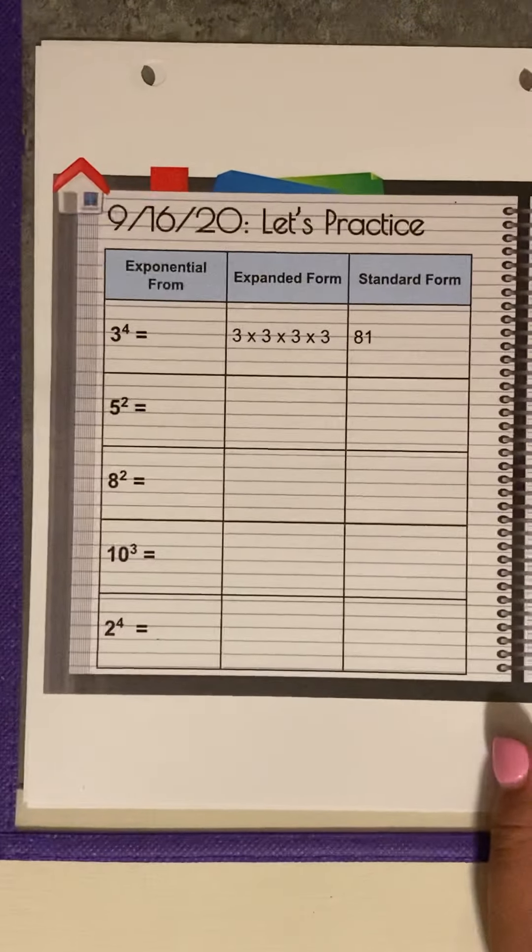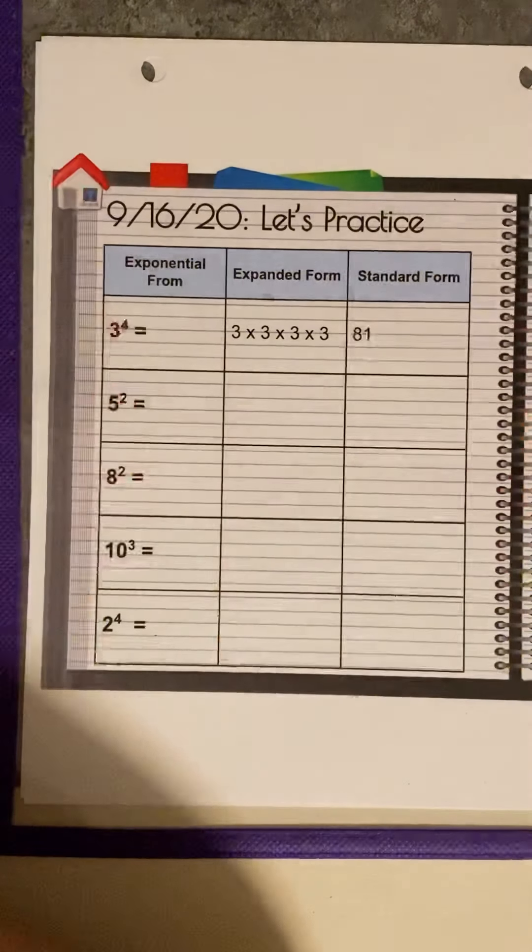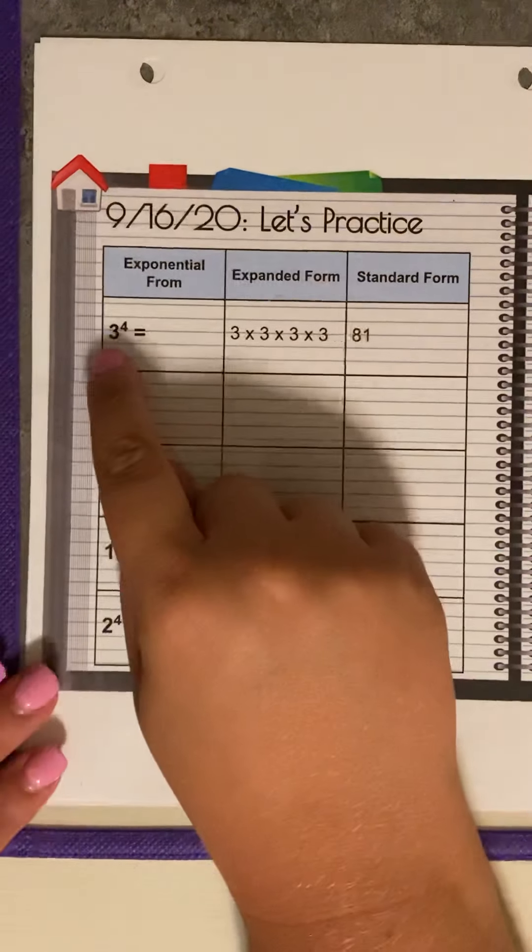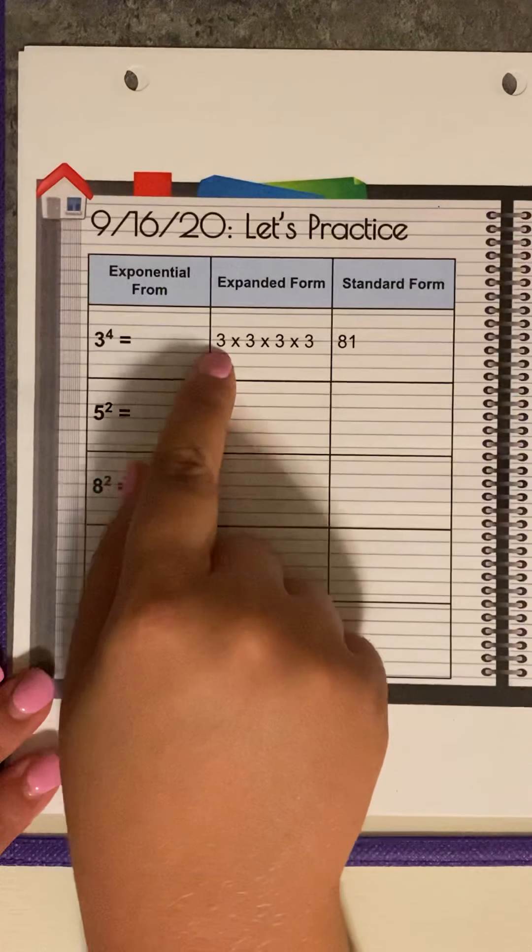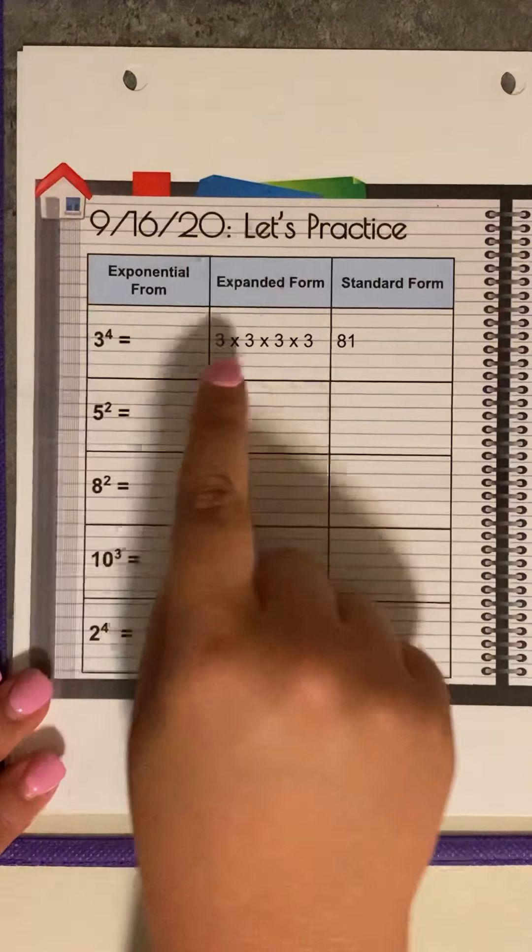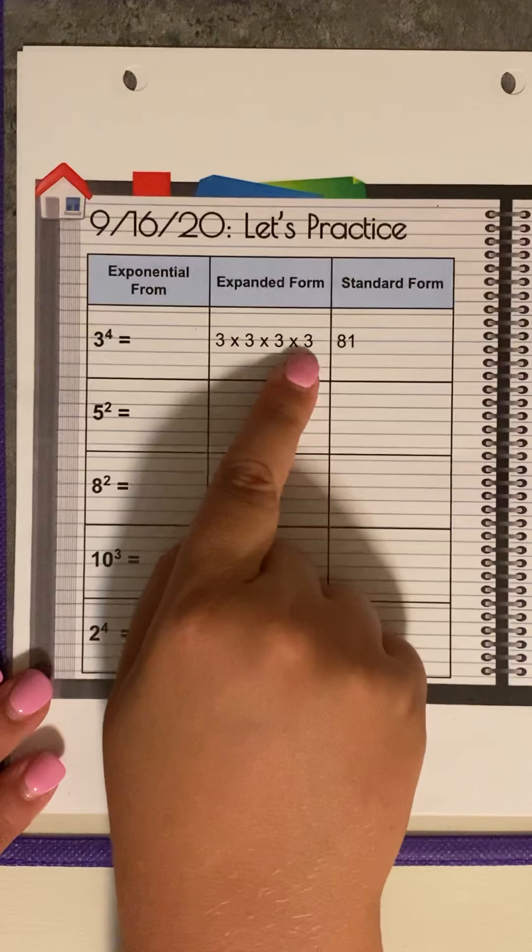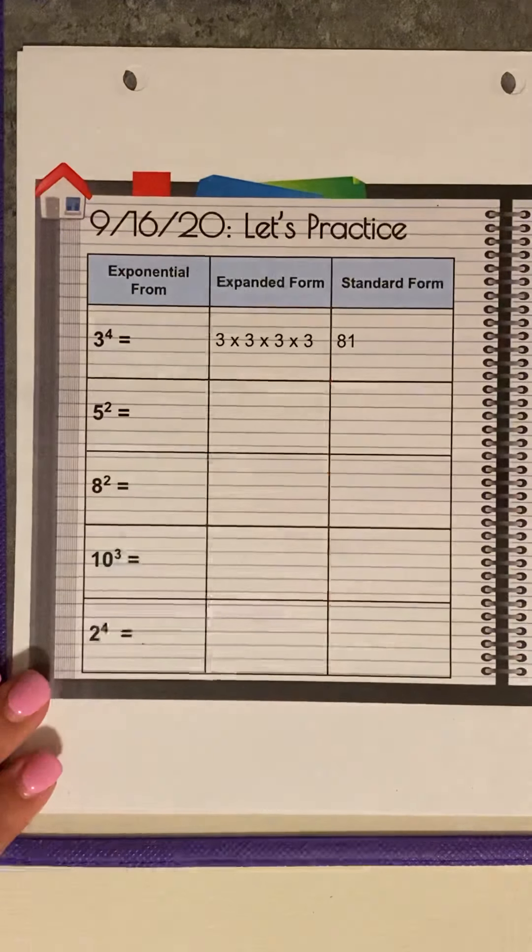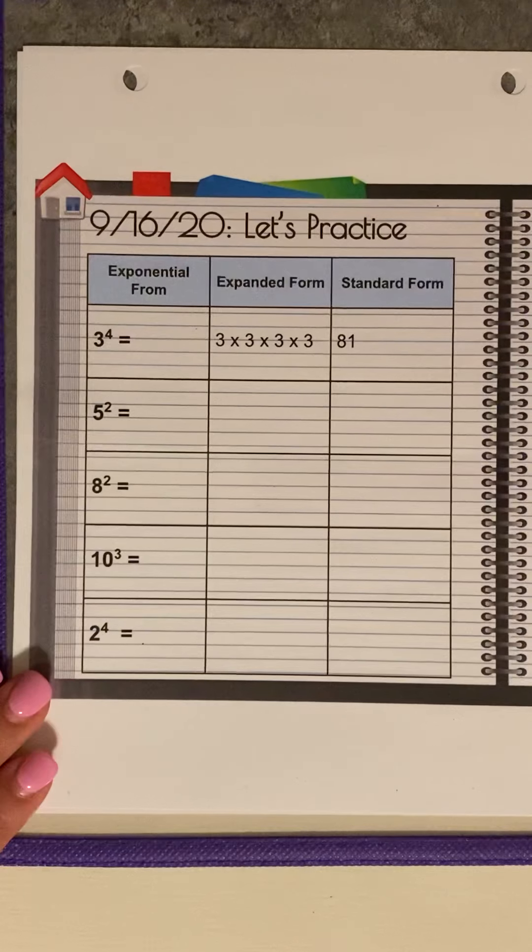So when we do look at this, three to the fourth power, this one's done for you. So our base is three. That's what we're going to be writing. How many times are we going to see that three? Well, that exponent tells us four times. So we have three times three times three times three. That equals 81. Three to the fourth power is 81.